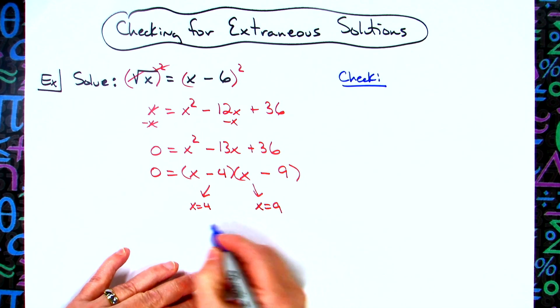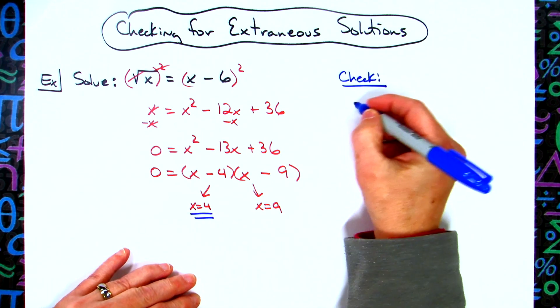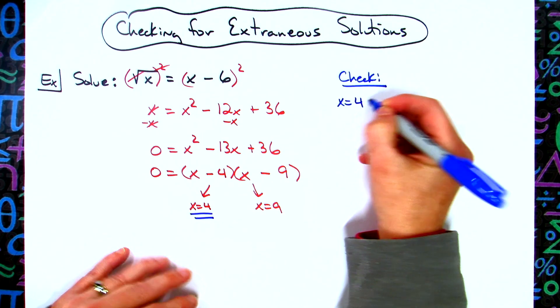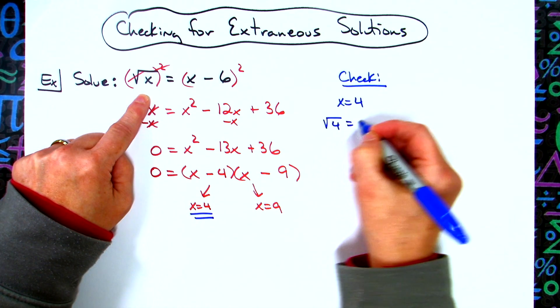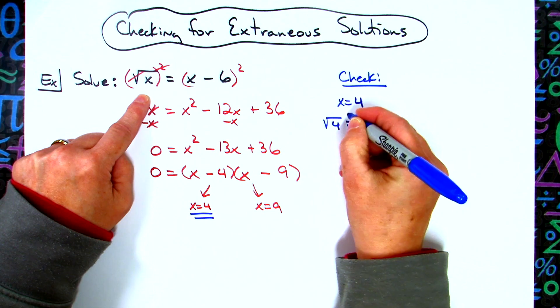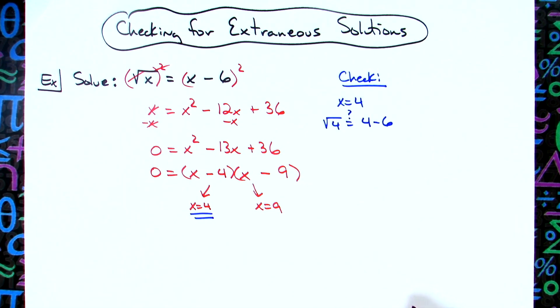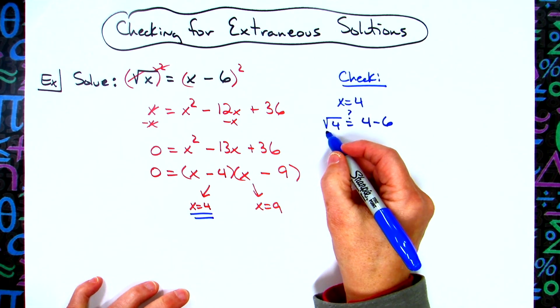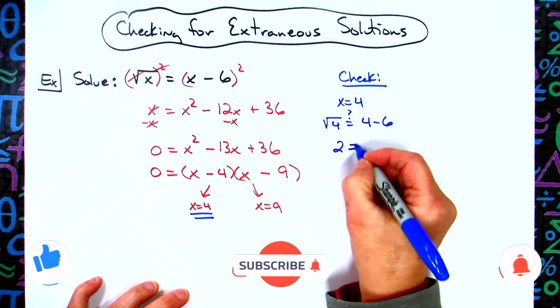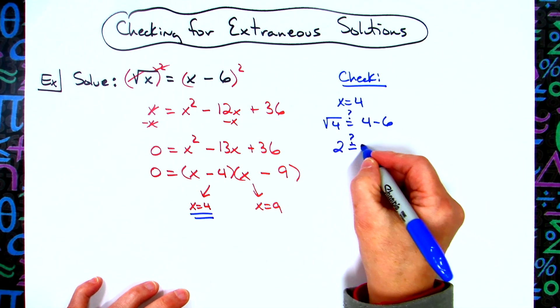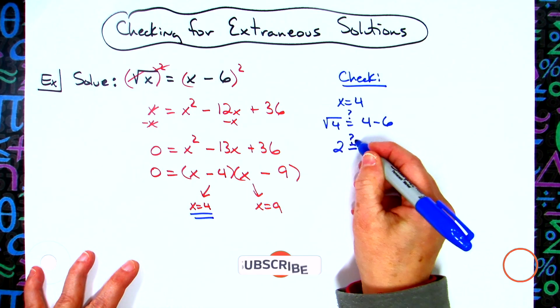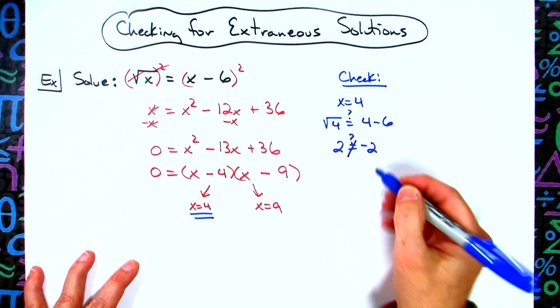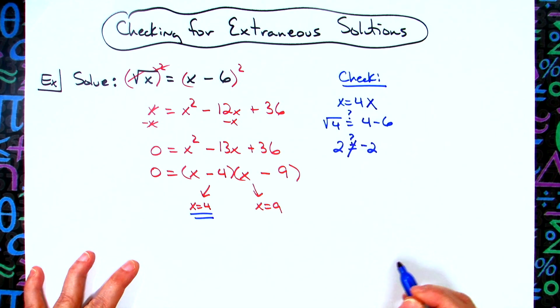We're going to first start with x = 4, and we're going to plug it in to the original equation. So square root of 4 = 4 - 6 question mark, because I don't know if this is going to be equal or not. Square root of 4 is 2. Is this going to be equal to 4 - 6? That's going to give me -2, so no, I do not get an equal statement here. So x = 4 is not one of our solutions. We have to throw it out. It is an extraneous root.